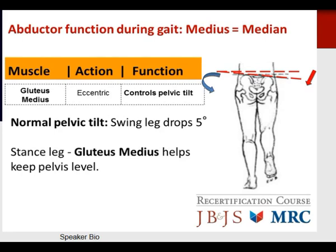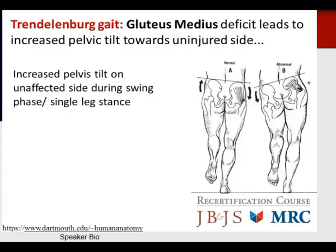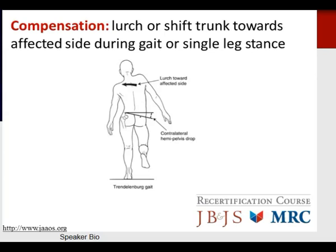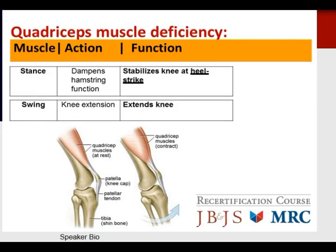Looking at abductor function during gait, the gluteus medius is the central aspect of gait stability. It functions eccentrically to control pelvic tilt, with normal pelvic tilt involving the swing leg dropping five degrees. On the stance leg, the gluteus medius helps keep the pelvis level. In Trendelenburg gait, the gluteus medius is deficient, leading to increased pelvic tilt toward the uninjured side during swing phase and single-leg stance, causing a compensatory lurch toward the affected side.